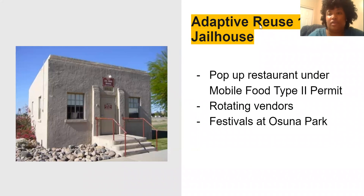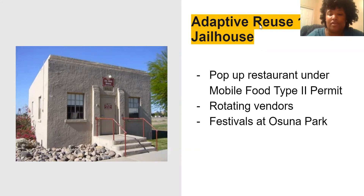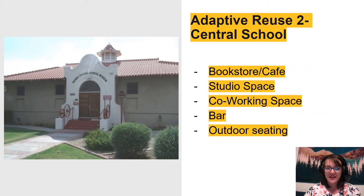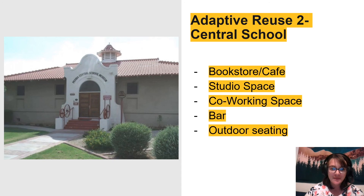The first recommendation for adaptive reuse is the jailhouse. Since the jailhouse is located right next to a park with lots of space, it was recommended that Old Town Peoria could use the jailhouse as a pop-up restaurant where individuals can grab food and go back to the event taking place.